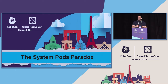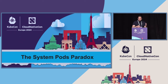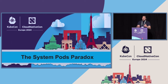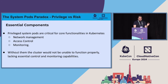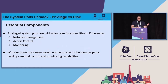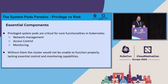This table summarizes everything we said about the different groups of system pods — which high privileges each group has, how each group increases the attack surface, and why they are attractive targets for an attacker. It's easy to see that system pods are very special: they are essential for core functionality but also introduce significant security risk. This is exactly what creates the system pods paradox.